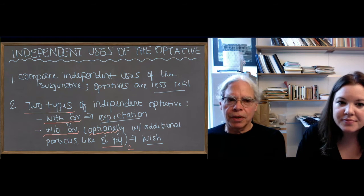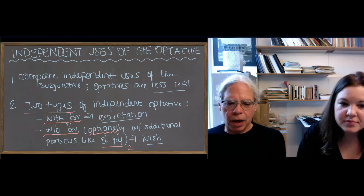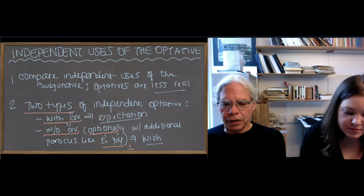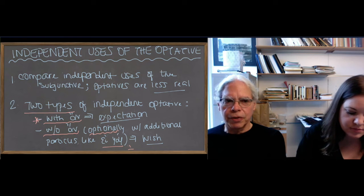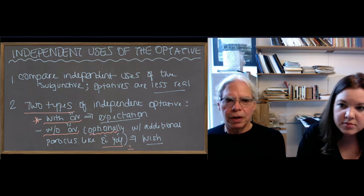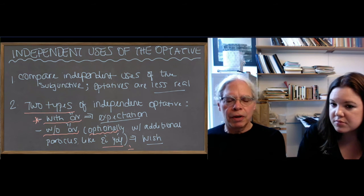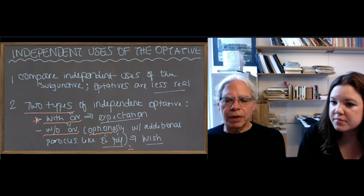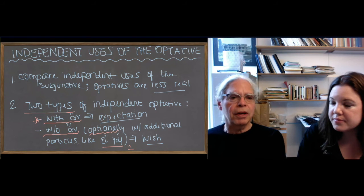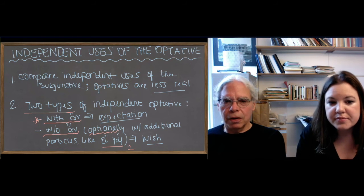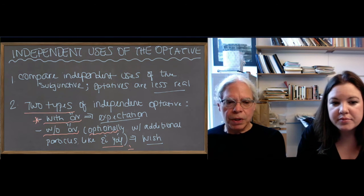Let's get back to the basic distinction. When you have 'an' in an independent optative, it's about an expectation — it's like the conclusion of a future less vivid, a should-would condition. It's about something that you expect will happen. Another name for this, which the book uses, is the potential optative: you're talking about something that potentially could happen, with the real idea being that you expect it might. The other one, the one without 'an,' expresses a wish on the part of the speaker that something happened.